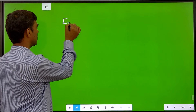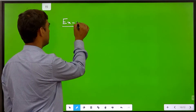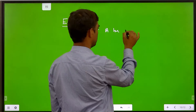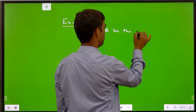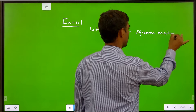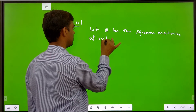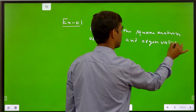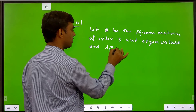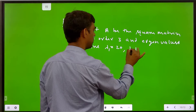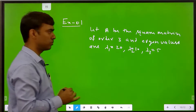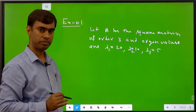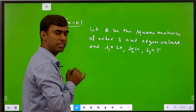Example 1: how we find the numerically smallest eigenvalue. Let A be a 3×3 square matrix with eigenvalues lambda 1 equal to 20, lambda 2 equal to 10, and lambda 3 equal to 5. Using the power method, we find the numerically largest eigenvalue, which is lambda 1 equal to 20.